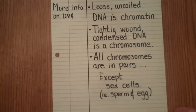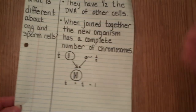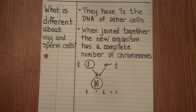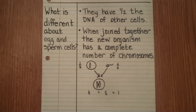Why are sperm and egg cells different from all of the other cells in your body? That's a good question, and it's the key to how organisms reproduce and have so much diversity. Sperm and egg cells have half the DNA when compared to all other cells in the organism. When a sperm and egg cell come together, the result is a complete number of chromosomes for the organism. One chromosome from the female parent is paired with the homologous chromosome from the male parent.